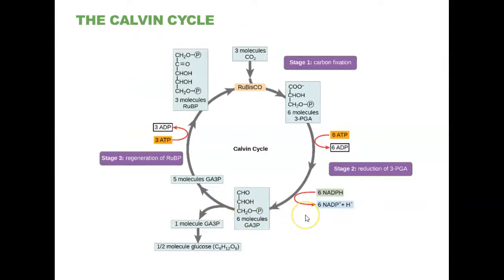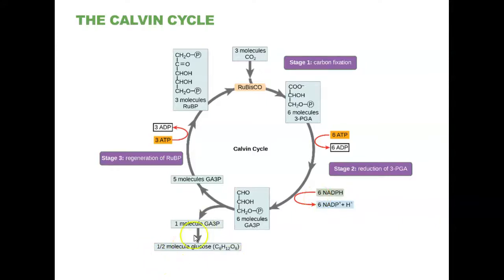To make one three-carbon sugar we need three CO2s coming in, nine ATP in total, and six NADPHs in total. To make an entire glucose molecule — described here as two halves — we would have to double all of these values. Three cycles are required to make one three-carbon G3P half-sugar molecule.